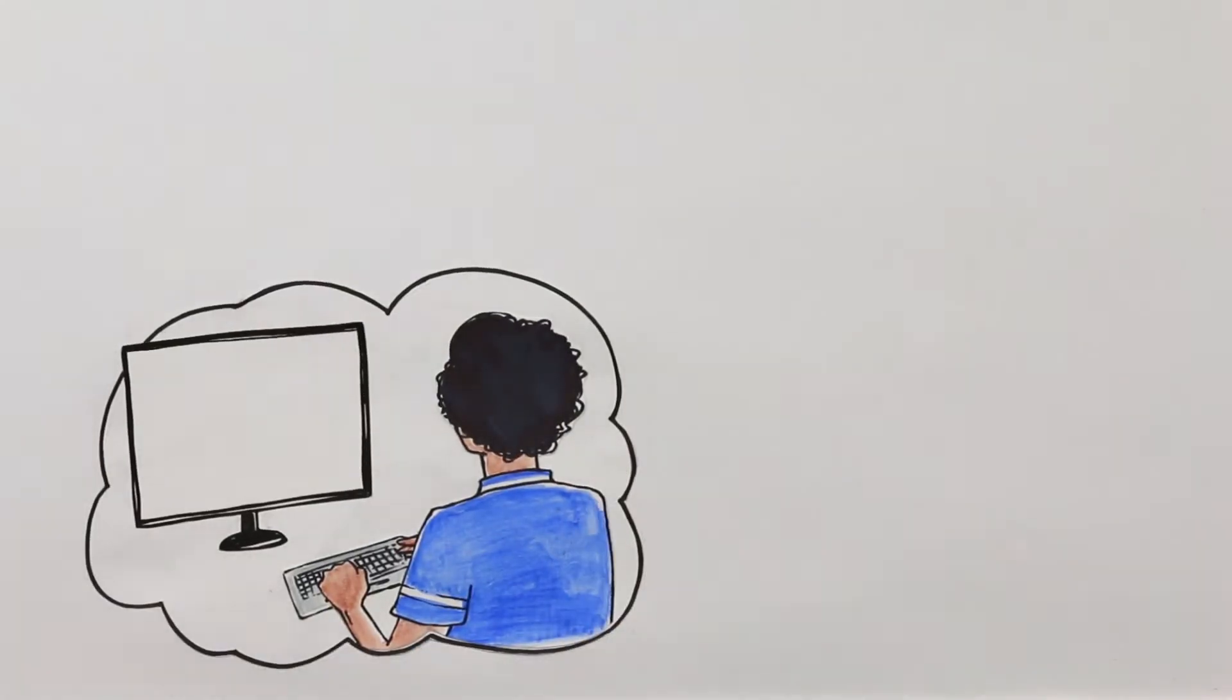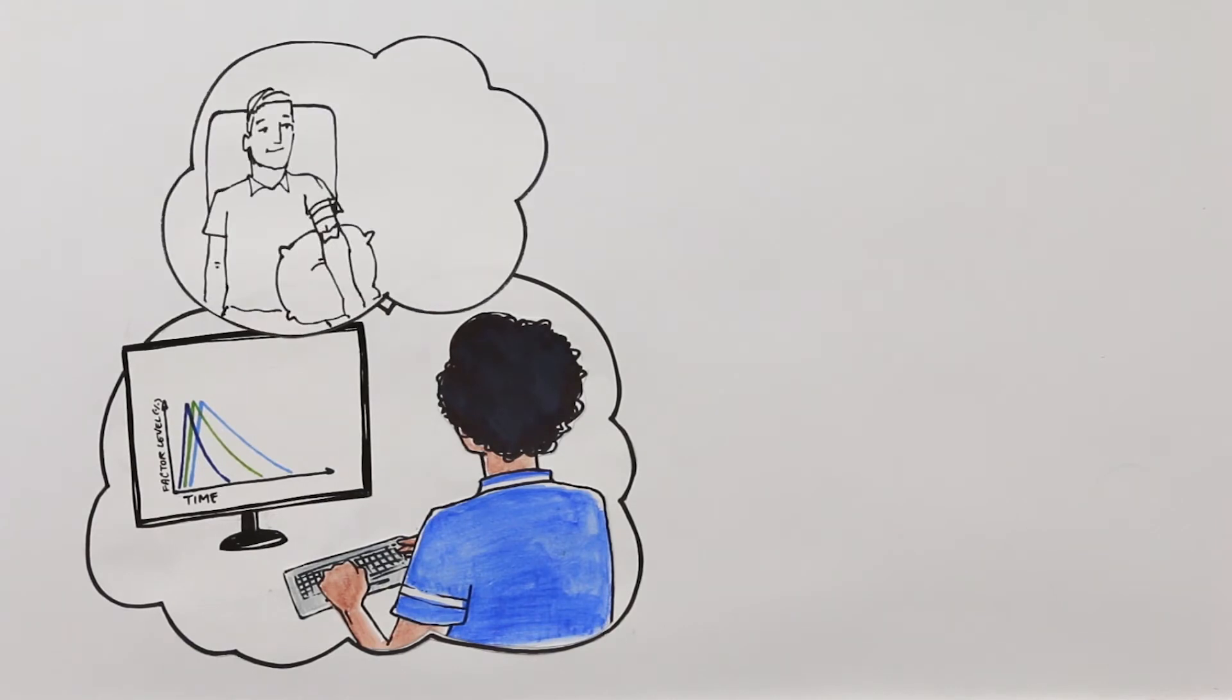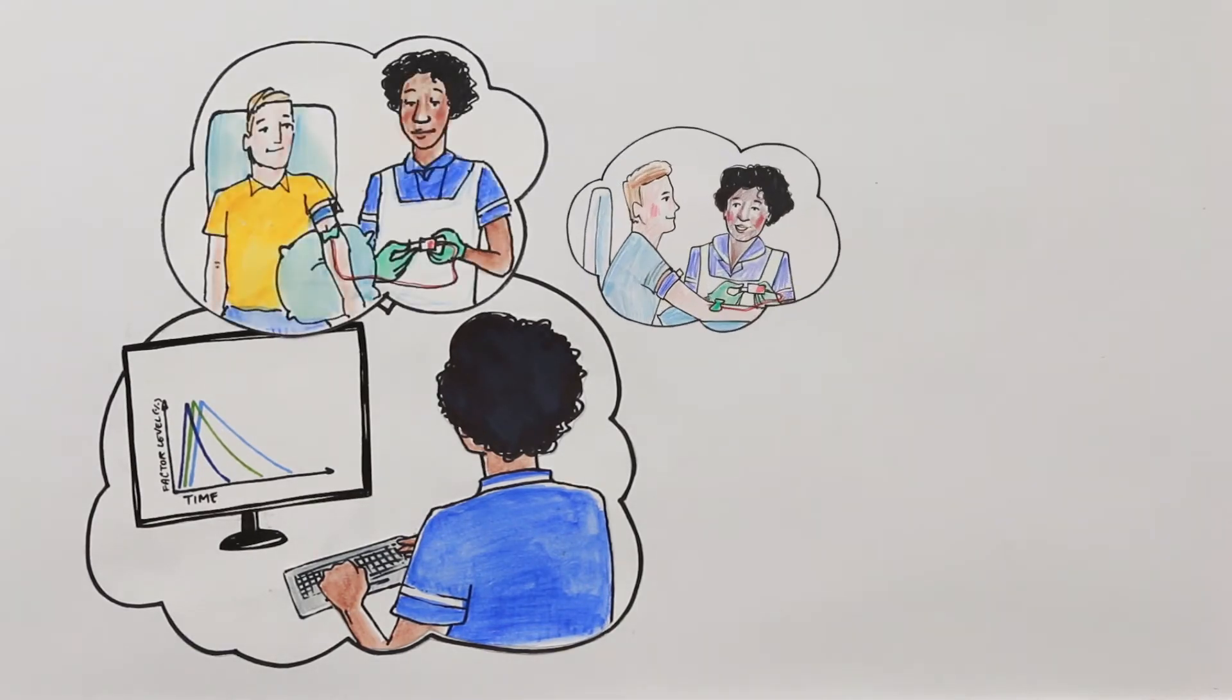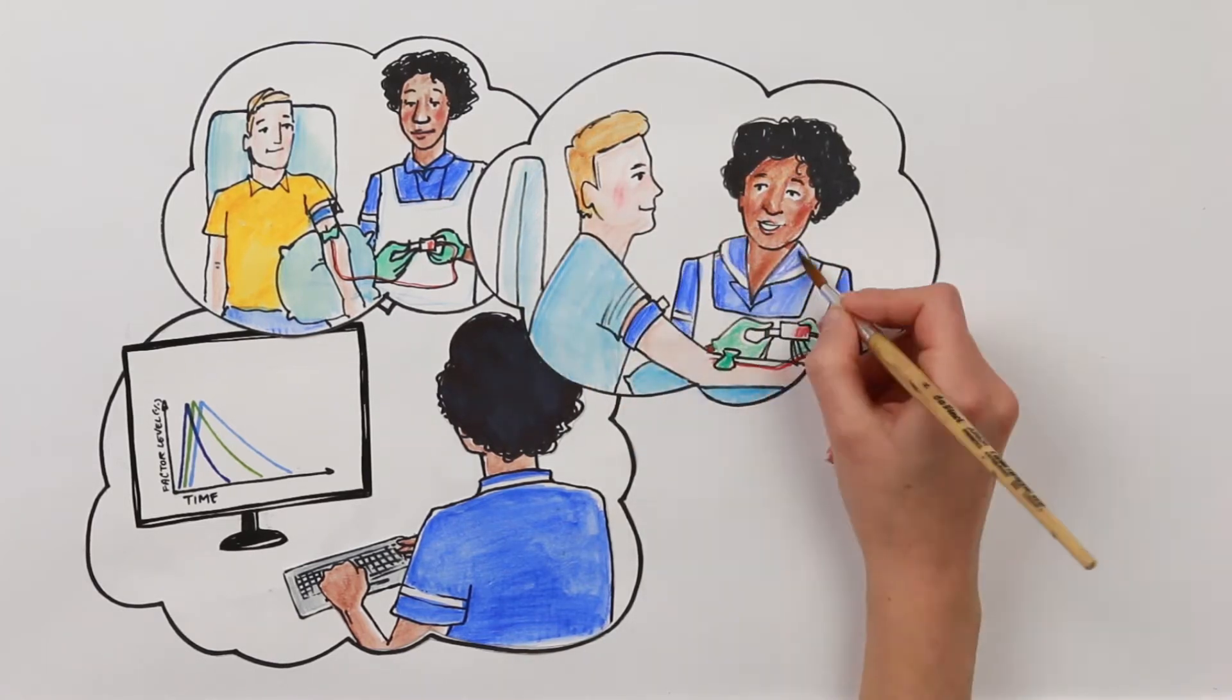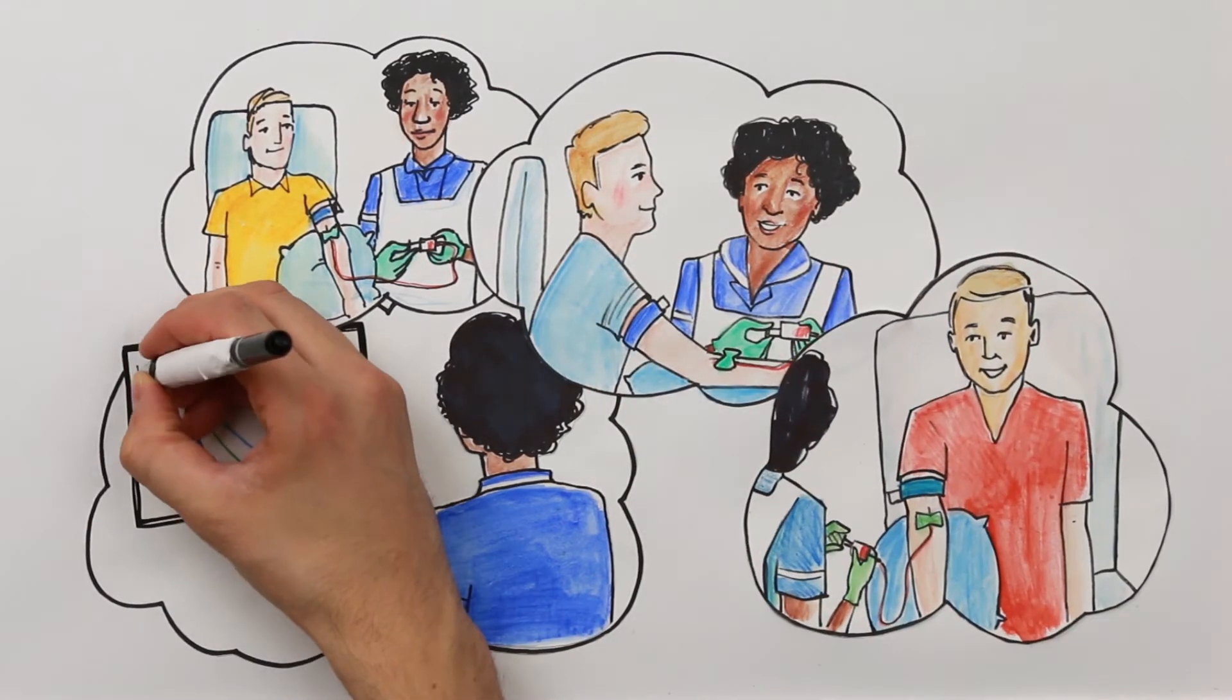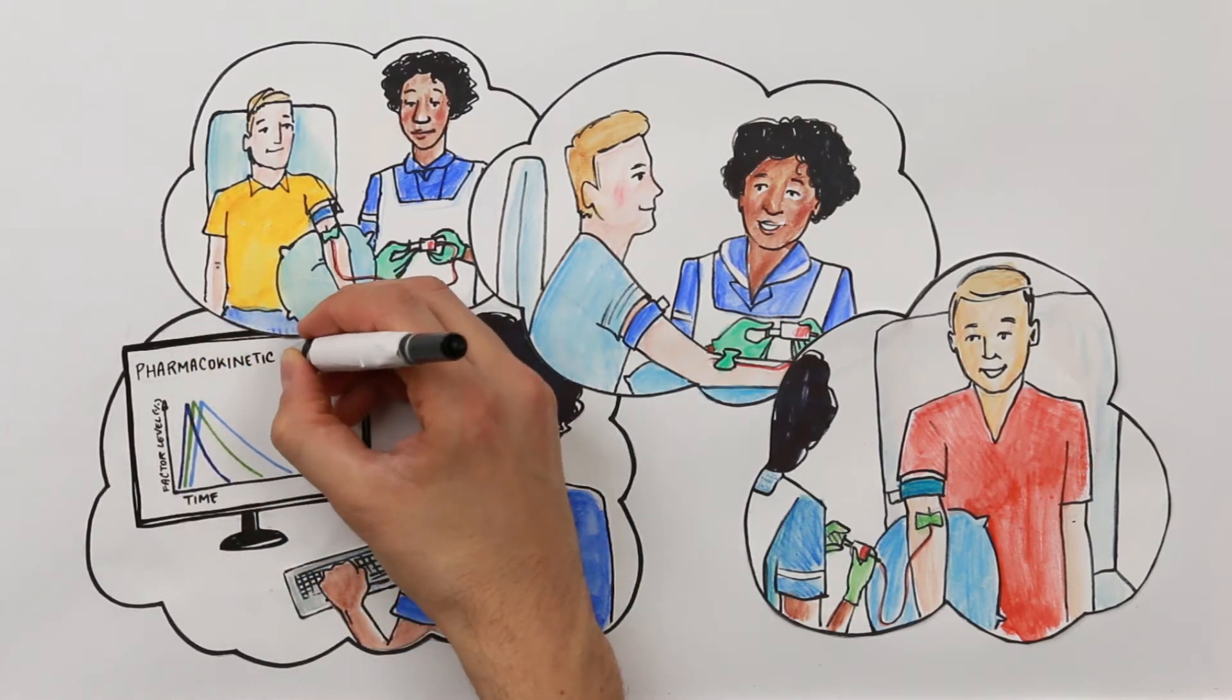But we are all different. Some people use up factor more quickly than others. To work out how long factor lasts in your blood, your clinical team will take a number of blood samples after an infusion and will measure how much factor remains in each sample. This is your pharmacokinetic or PK profile.